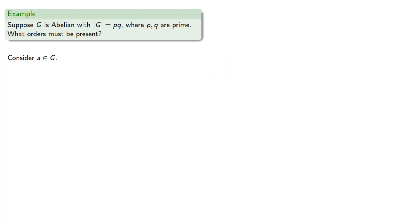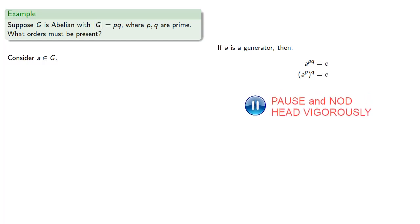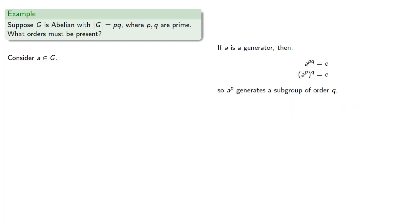Consider some element a of G. If a is a generator, then we know that a to the power pq must be the identity of the group. And because the exponents are counts, all of our standard rules apply. So a to the power p, raised to the power q, must also be the identity. So a to the power p generates a subgroup of order q.